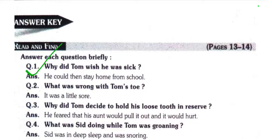First question: Why did Tom wish he was sick? Answer: So he could stay home from school. Question number two: What was wrong with Tom's toe? It was a little sore. Question number three: Why did Tom decide to hold his loose tooth in reserve? He feared that his aunt would pull it out and it would hurt.